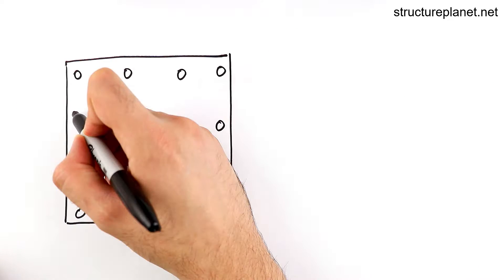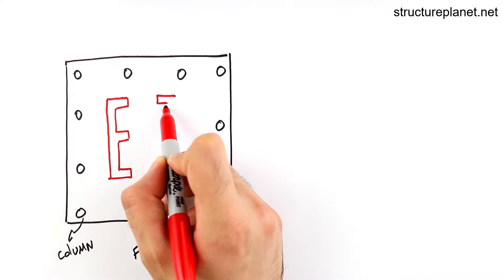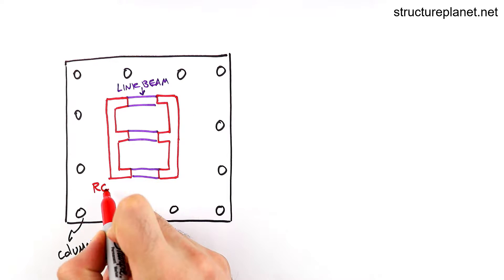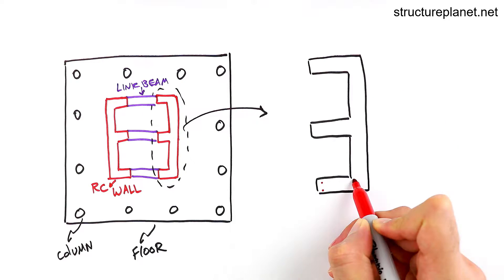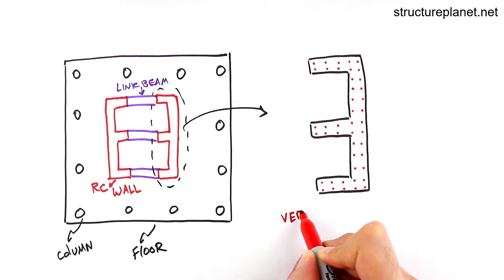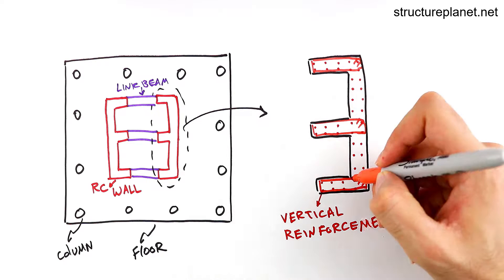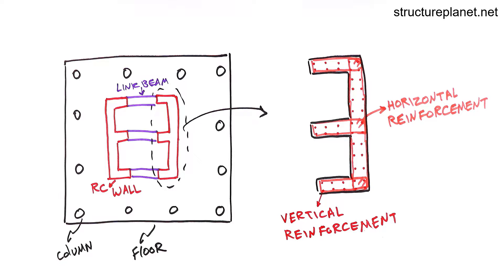Shear walls are solid reinforced concrete elements that can accommodate openings for doors, windows, pipes or ducts. Separate pieces of shear walls close to each other can be coupled together using link beams or coupling beams, which will result in a stiffer lateral system.